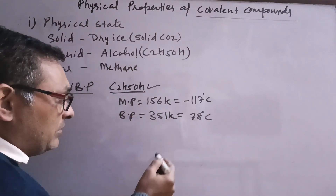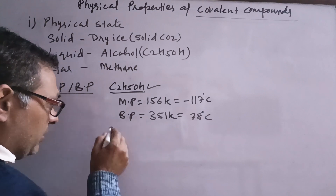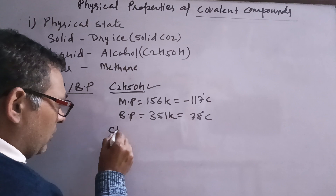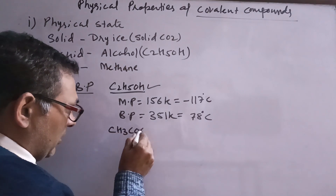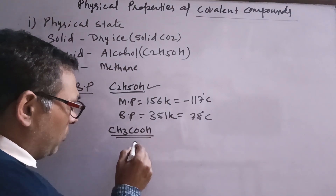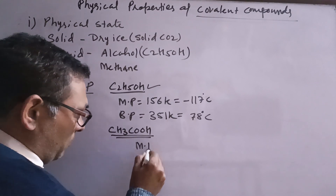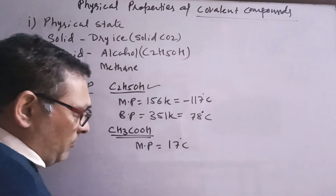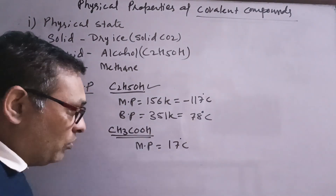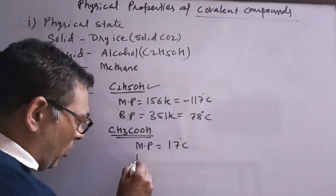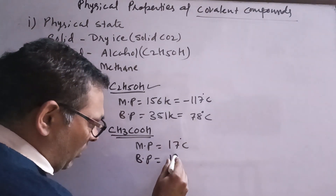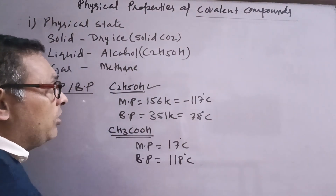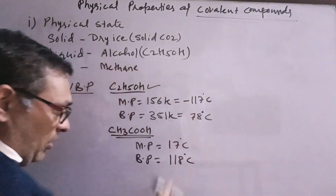We will also talk about glacial acetic acid, which is generally called acetic acid. Its melting point is 17 degrees Celsius — this is why in winter, pure acetic acid can solidify. The boiling point is 118 degrees Celsius. So the melting and boiling points of covalent compounds are generally very low.